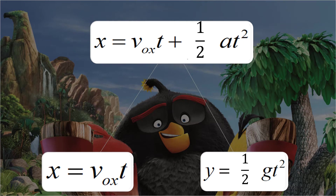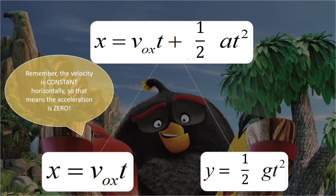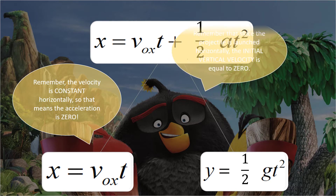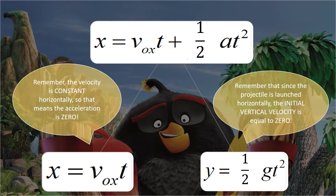To analyze a projectile in two dimensions, we need two equations — one for the x-direction and one for the y-direction. For x-direction: x equals initial horizontal velocity times time plus one-half times acceleration times time squared. Since horizontal velocity is constant, acceleration is 0, therefore x equals initial horizontal velocity times time. Since the projectile is launched horizontally, the initial vertical velocity equals 0, therefore y equals one-half times gravity times time squared.